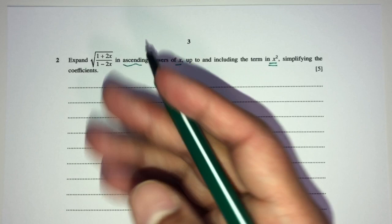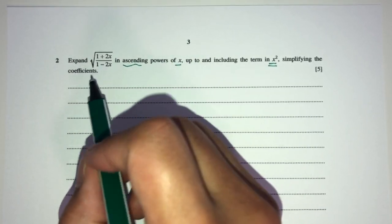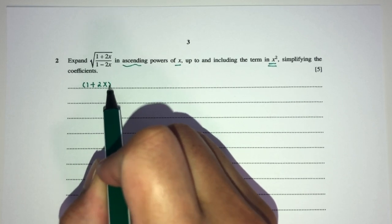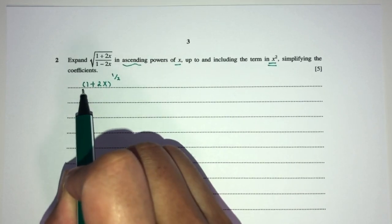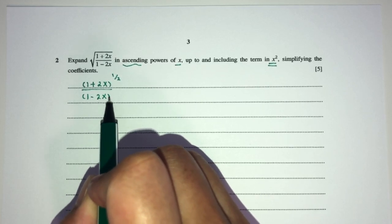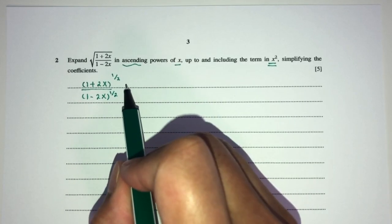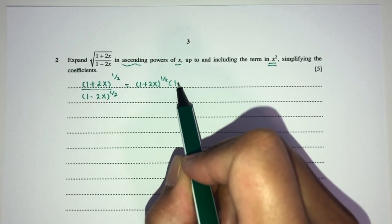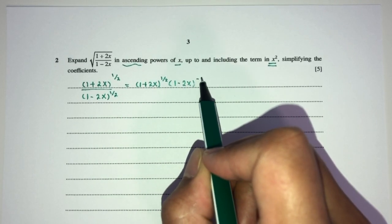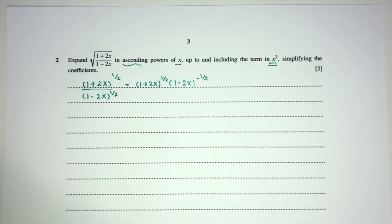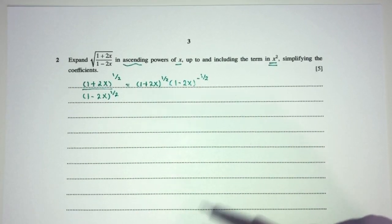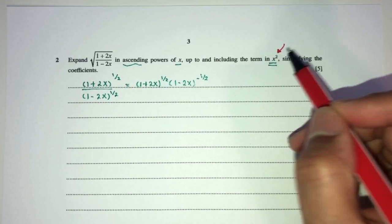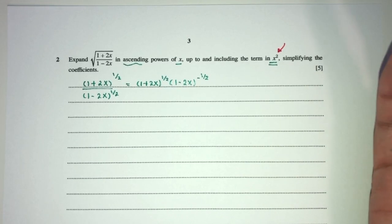First thing first we have to simplify this. There are many ways to do that. One way is we realize this can be broken down into (1+2x) to the power half divided by (1-2x) to the power half. We can rewrite this as (1+2x) to the power half multiplied by (1-2x) to the power minus half by the laws of indices. Now we can expand this one by one and find the values up to x squared. Another way is to first simplify — multiply by (1+2x) over (1+2x).